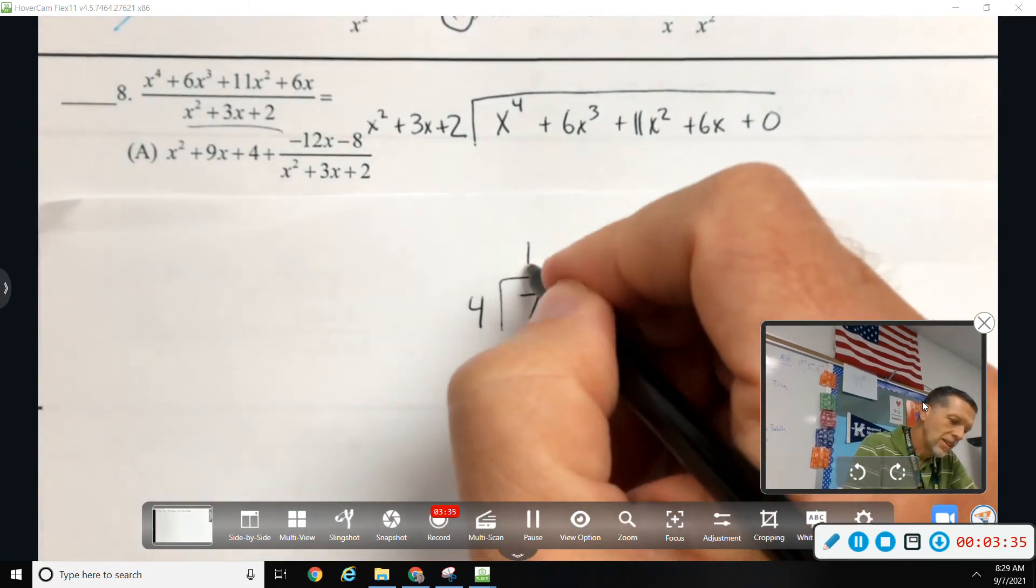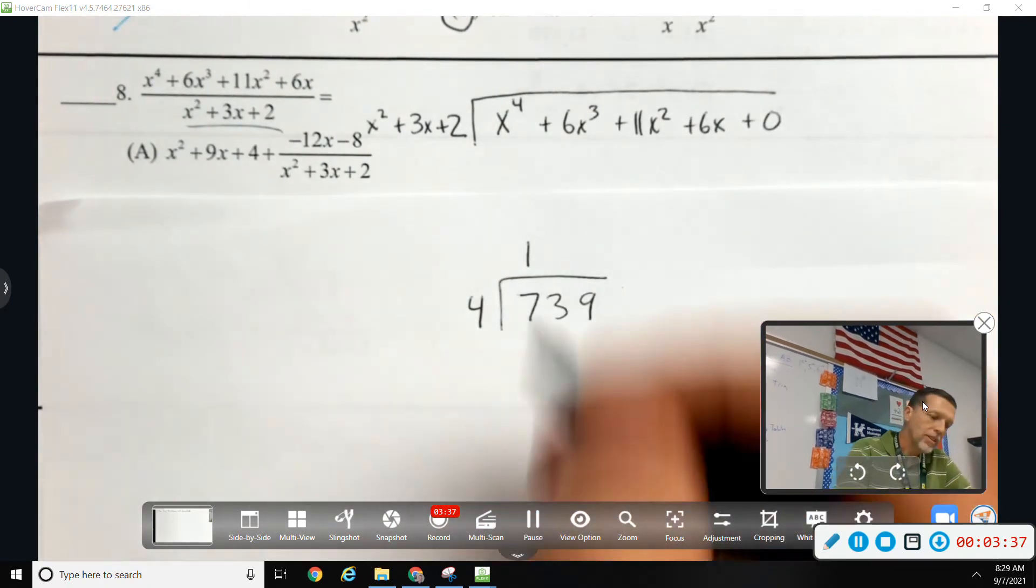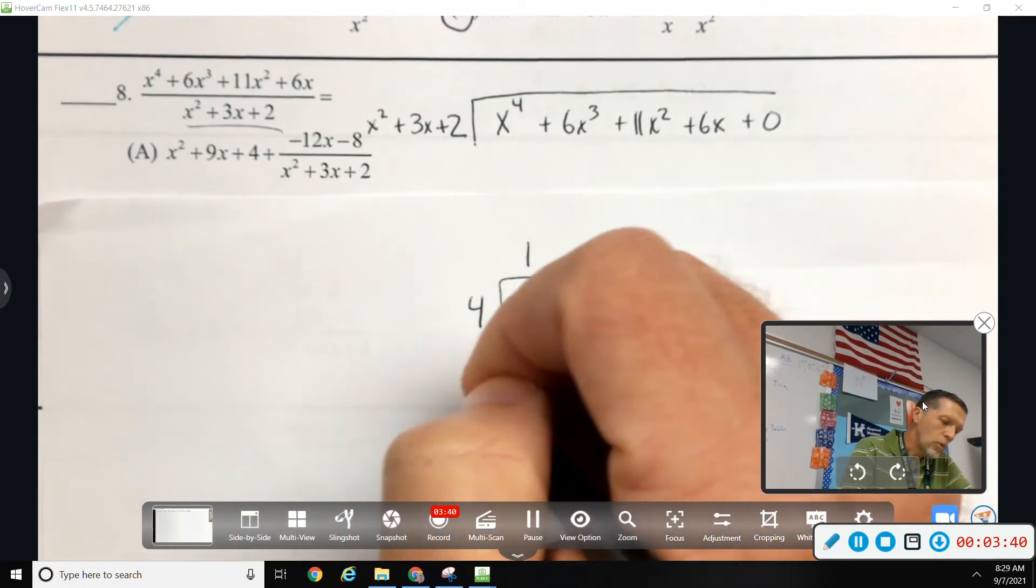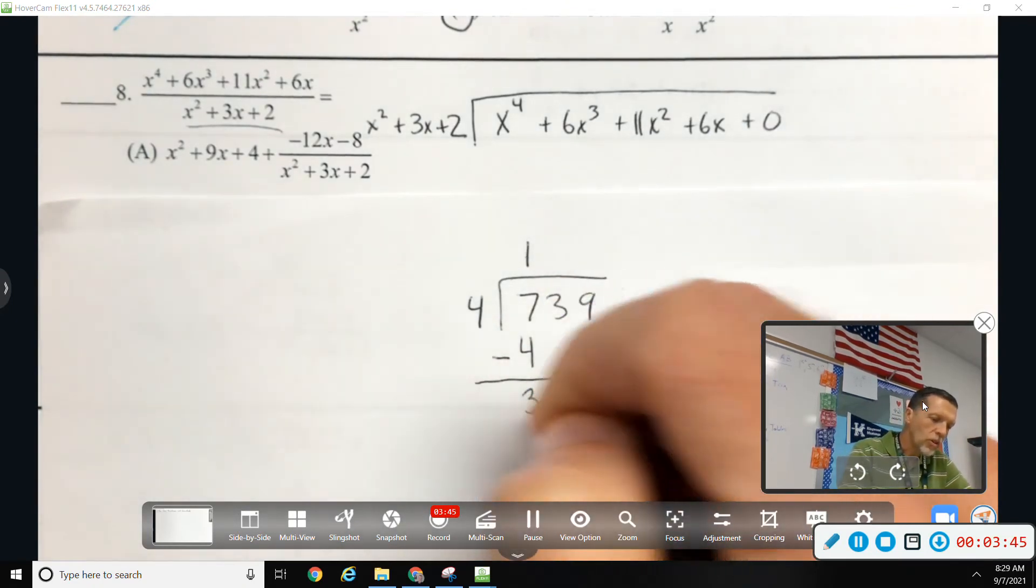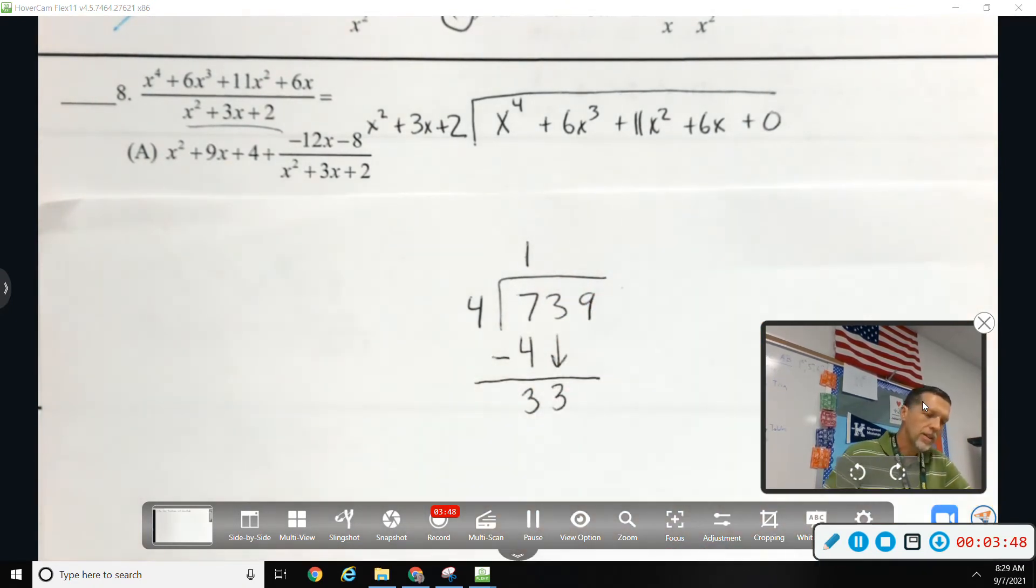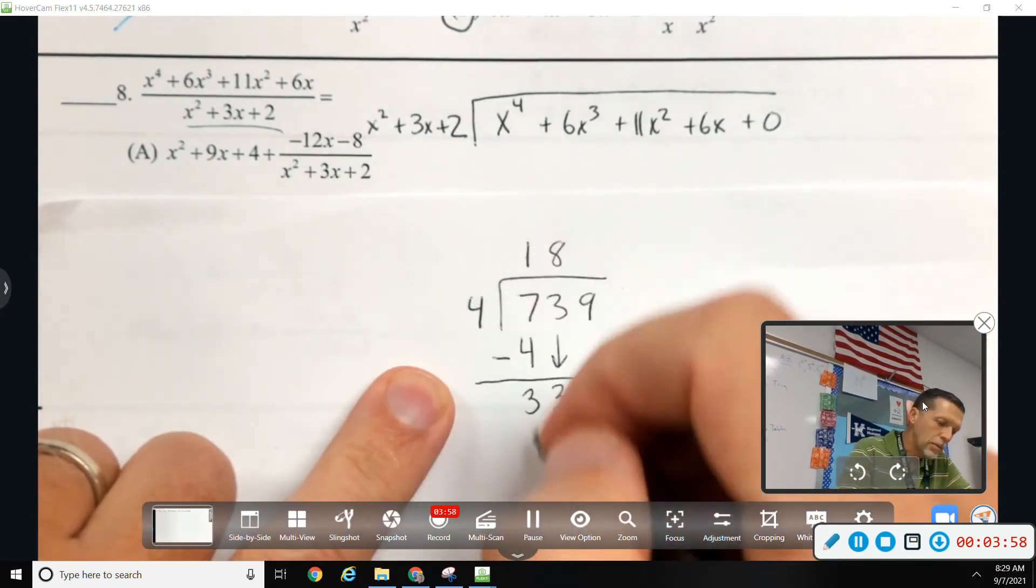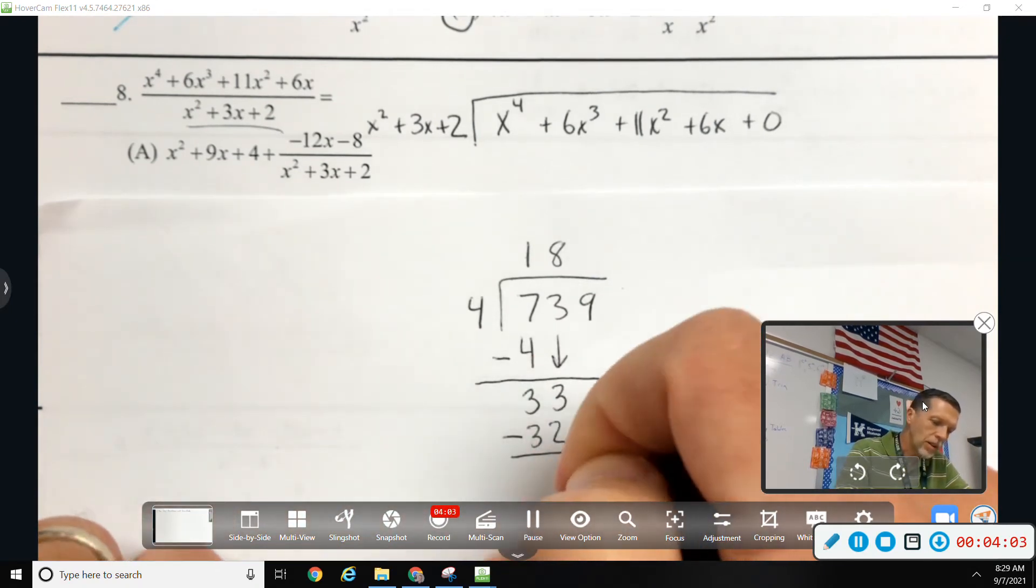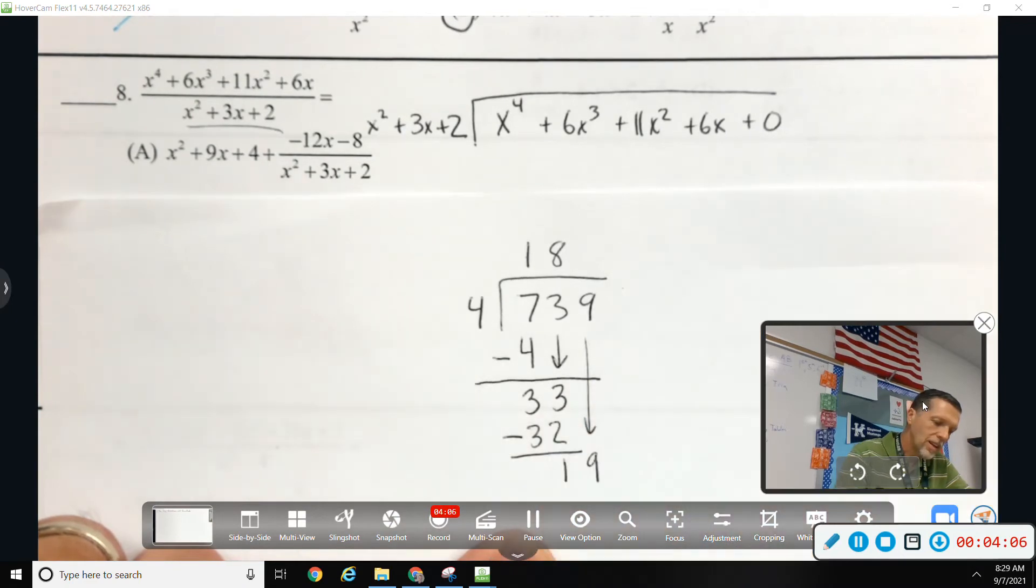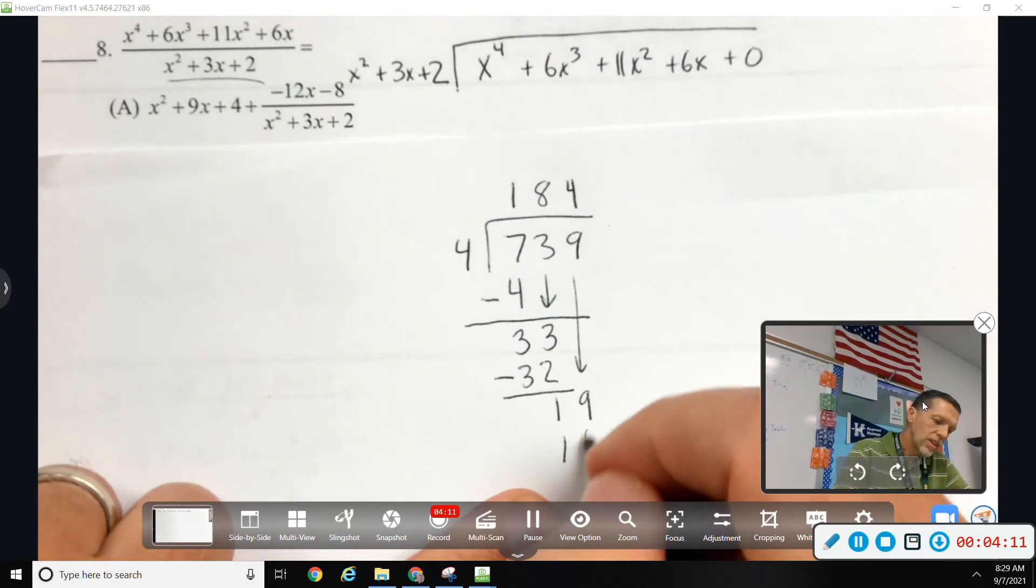So, let's see. 4 goes into 7, 1 times, sort of. Multiply it back. 1 times 4 is 4. But then we subtract the 4. 7 minus 4 is 3. Bring down the next term. Yeah, but the process with numbers is the same as the process with letters. So, that's why I take the time to do this. 8 times 4 gets me close. Subtract it again. 3, so that's 1. Bring down the 9. 4 goes into 19, 4-ish times.